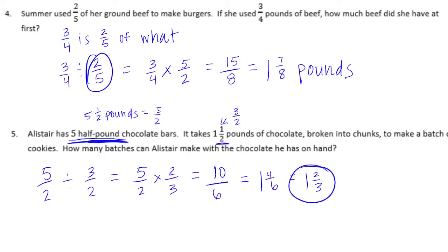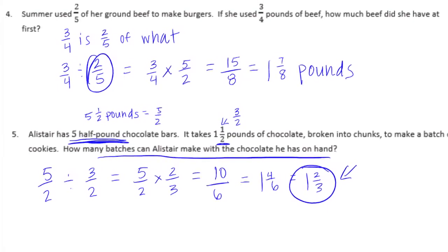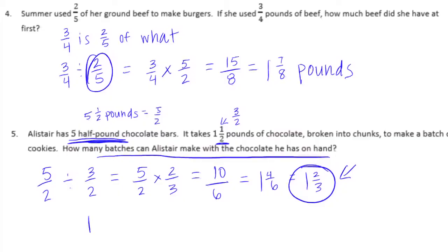But looking back at the question — how many batches can Alistair make with the chocolate he has on hand? — he can make 1 and 2 thirds batches, but really that's only 1 full batch. So Alistair can make 1 full batch with 2 thirds left over.